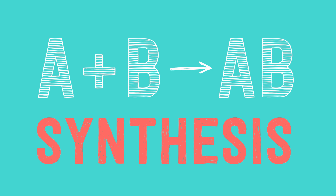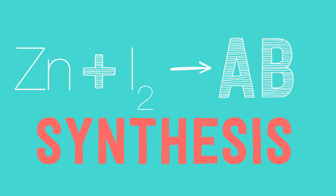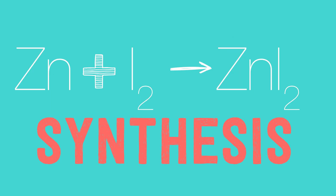For example, zinc and iodide react to make zinc iodide. Let's take a look at this reaction so I can waste a little bit more of your time.